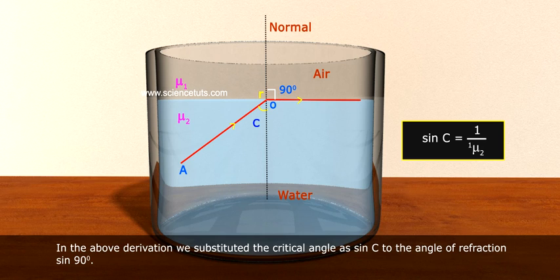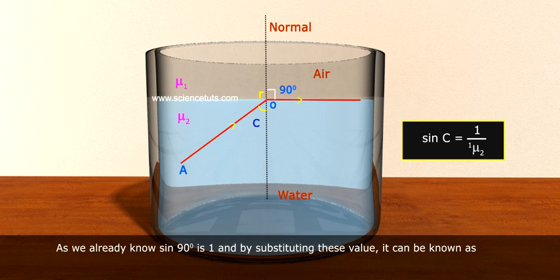In the above derivation, we substituted the critical angle as sin C to the angle of refraction, sin 90 degree. As we already know, sin 90 degree is 1, and by substituting these values,